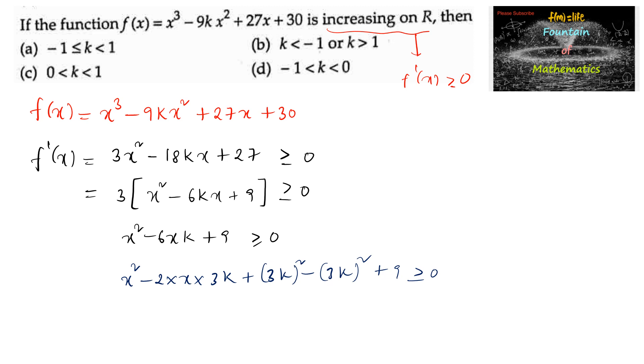By using the perfect square method, we can write (x - 3k)² + 9 - (3k)² ≥ 0.